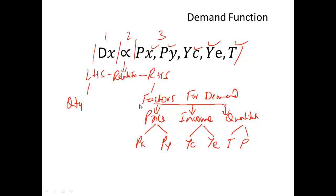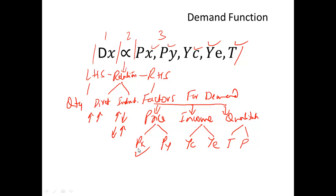The relationship between the left-hand side and right-hand side may vary from one factor to another. A direct relationship means when one side increases, the other also increases. An indirect relationship means when one side increases, the other decreases. For example, the price of x has an indirect relationship with the quantity of x, whereas current income generally has a direct relationship with the quantity of x.